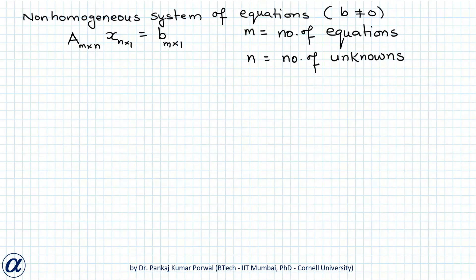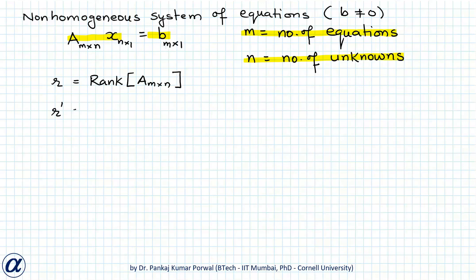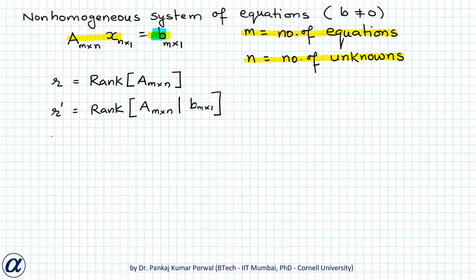For a non-homogeneous system Ax equals b with m equations and n unknowns, we define two ranks: r equals the rank of the coefficient matrix A (of size m by n), and r' equals the rank of the augmented matrix, obtained by appending the constant vector b as an additional column to A. If r is not equal to r', the system is inconsistent. If r equals r', the system is consistent; and if r equals r' equals n there is a unique solution, while if r equals r' is less than n there are infinitely many solutions.